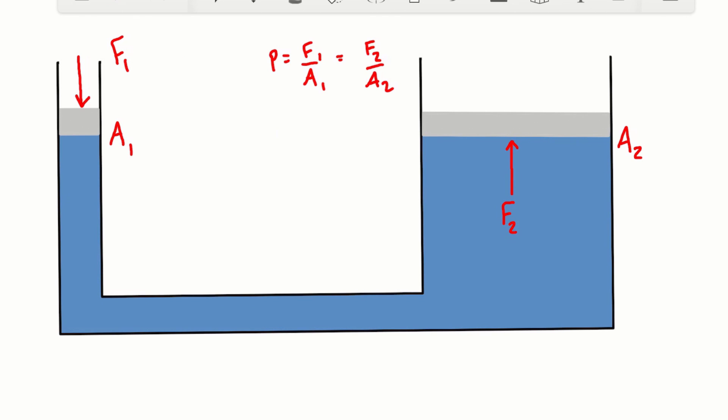So if we know the applied force, force 1, and we're looking for force 2, then we can, through cross multiplication, just rearrange this a little bit and have F2 is just equal to F1 times area 2 divided by area 1. And we're going to get a multiplication factor, which is basically just the ratio of the areas. So let's just assign some numbers to this and work through the problem.